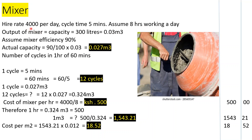In 12 cycles we produce 12 × 0.027 = 0.324 m³ per hour. Cost of mixer per hour: 4,000 ÷ 8 = 500 per hour. Cost per m³: 500 ÷ 0.324 = 1,543.21. Cost per m²: 1,543.21 × 0.012 (12 mm thickness) = 18.52.